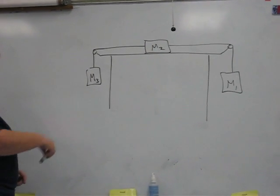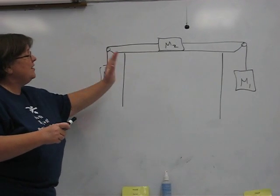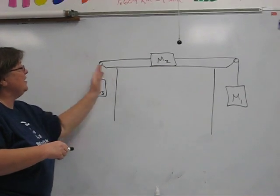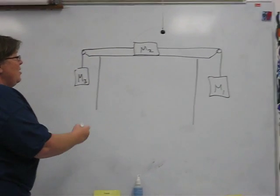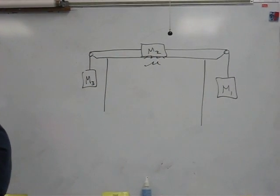This is a fun problem because now we've got three masses all connected. The second one is sitting on the top of the table. We'll even let there be friction between mass two and the tabletop.